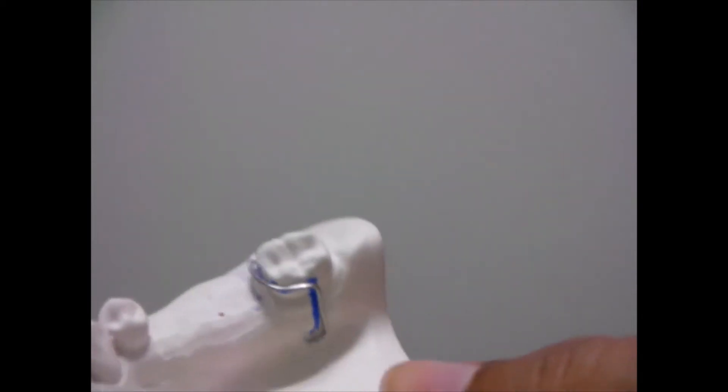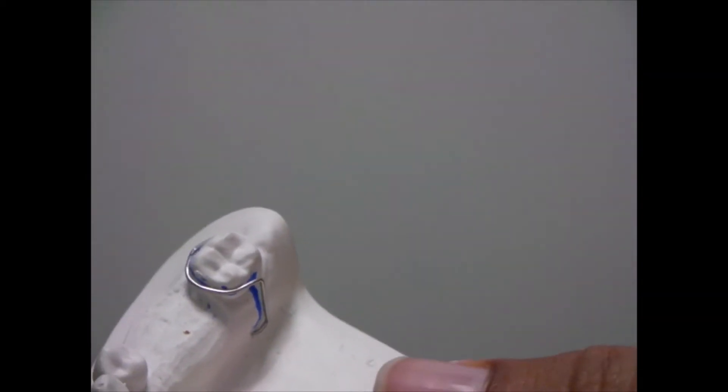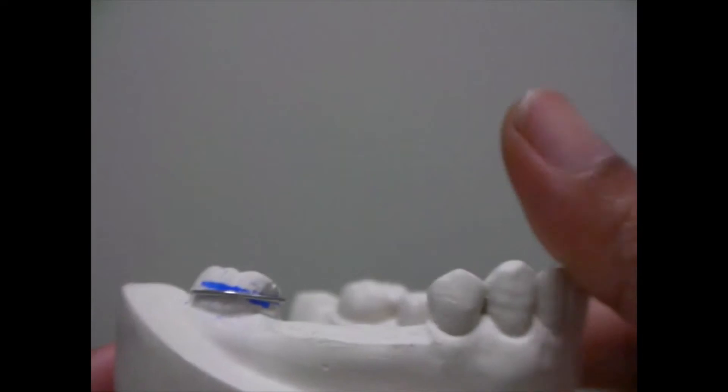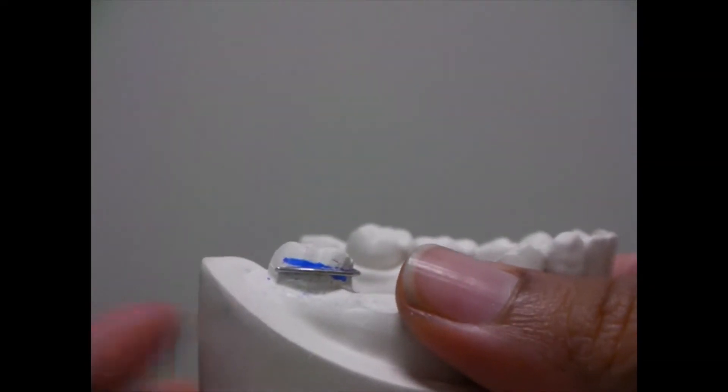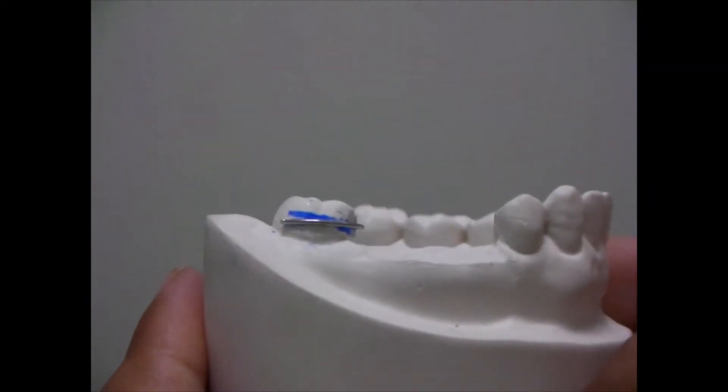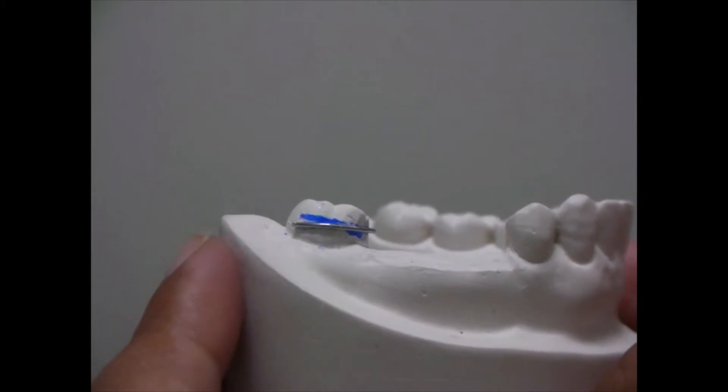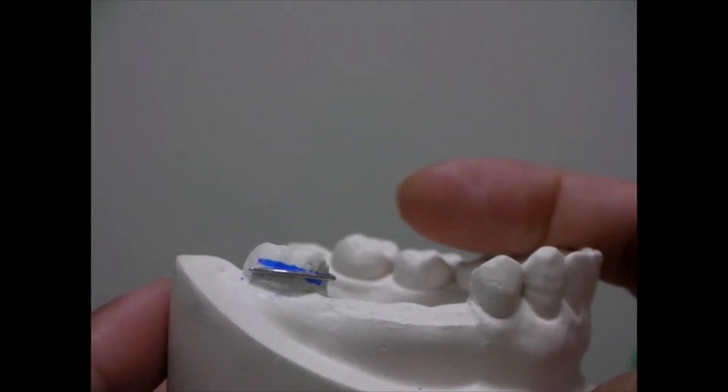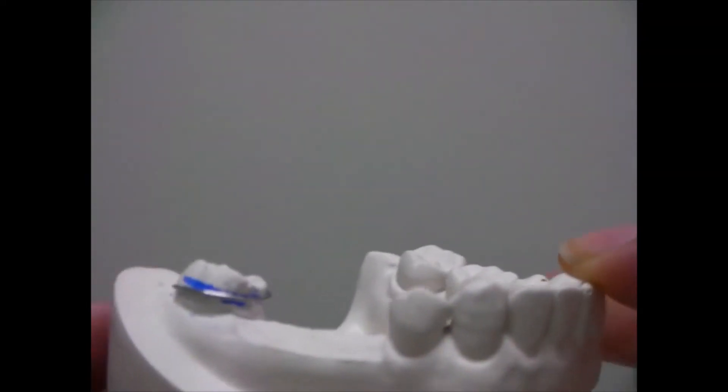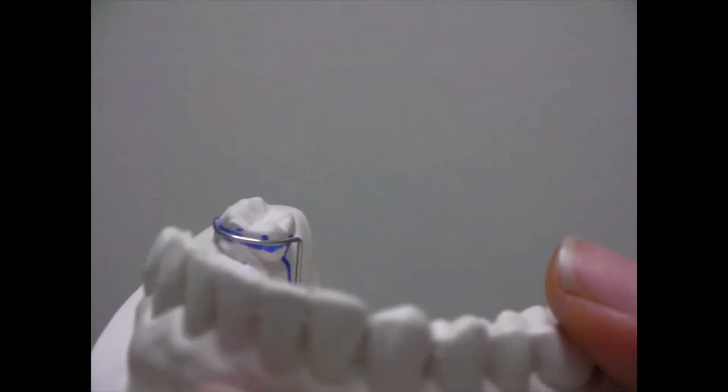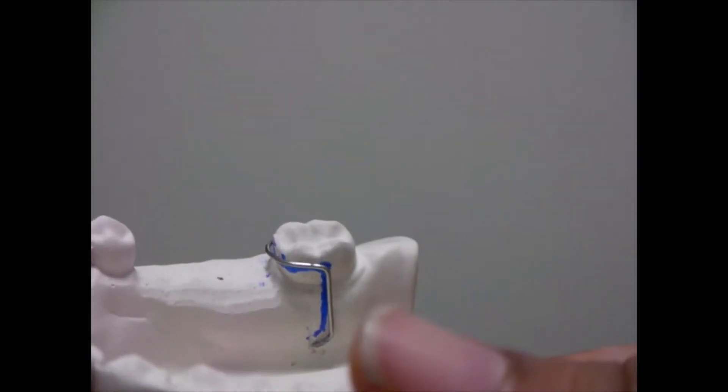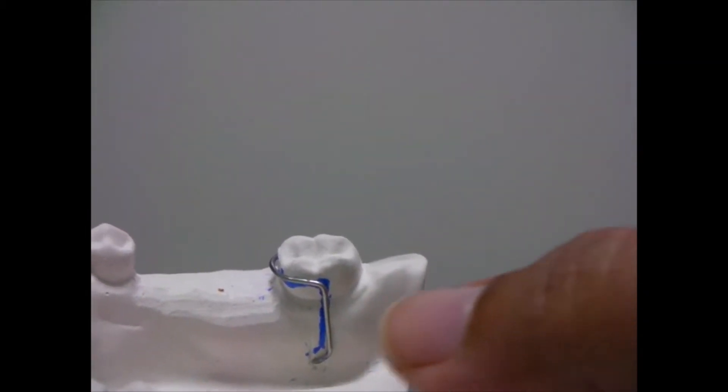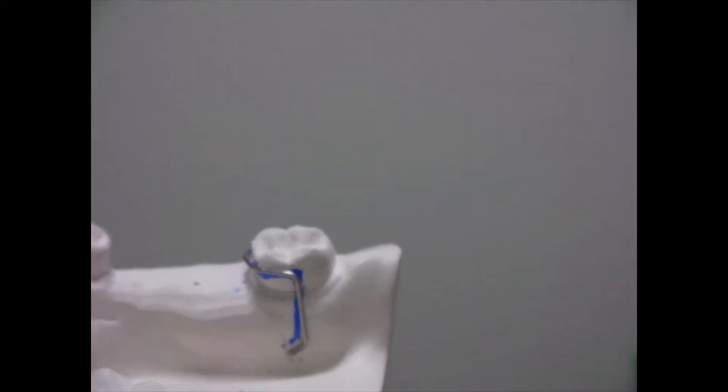So as we study the parts of this clasp you can see that here we have the active arm or the buccal arm which is actually engaging the buccal part of the tooth and this is now going to follow the circumference of the tooth to go on the lingual side and here we have the reciprocal arm.